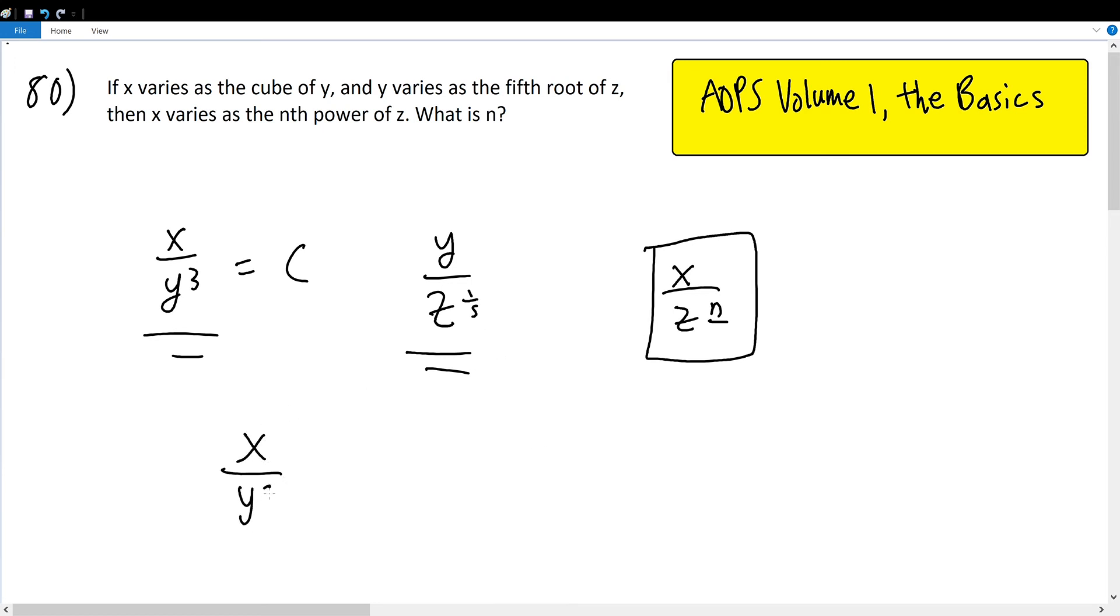So x over y to the third times y over z to the one-fifth should give something that is in the form of x over z to the n power. But how are we supposed to get rid of y? Because we don't want y.